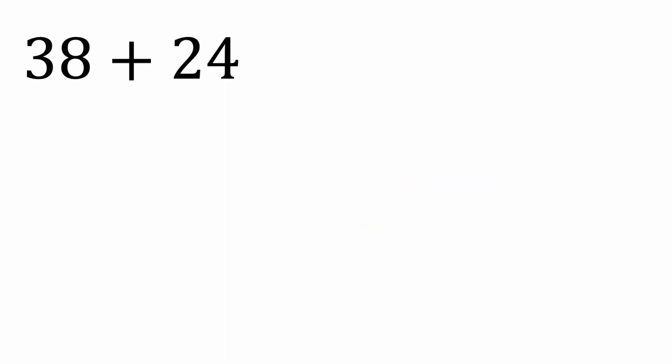Now another technique is often you'd want to avoid high-digit numbers. So 8 is a pretty high digit. So instead we can change this to 4, 2 bar because 40 minus 2 is 38. And then we can keep our 24. And so we have 4, 2 bar plus 24. 4 plus 2 is 6. It's like negative 2 plus 4, so we get positive 2. So we get 62.